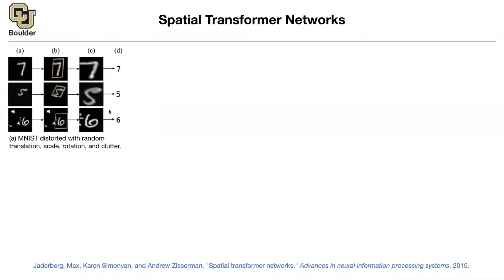What you're describing — where an image has a whole bunch of regions and it says over here we have a cat, over here we have a car, over here we have a tree — that is not actually segmentation. That's object detection. And we are going to cover object detection.